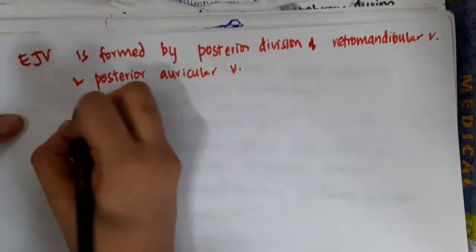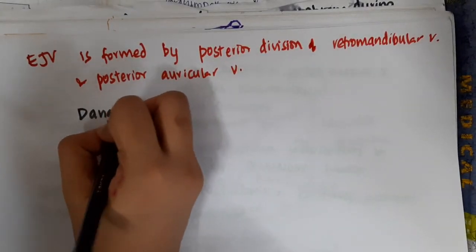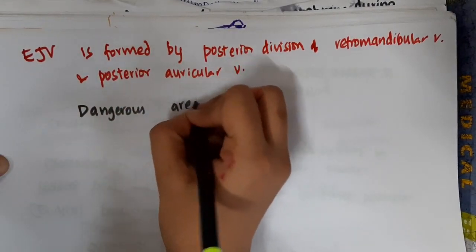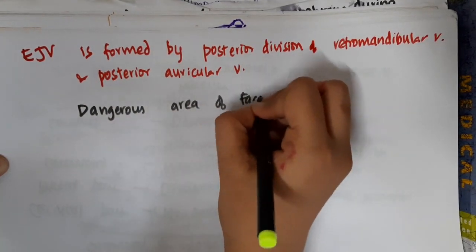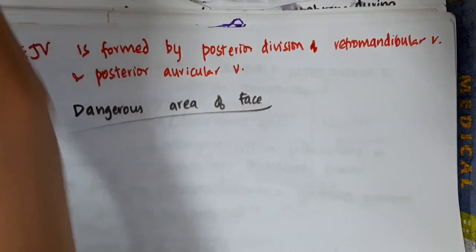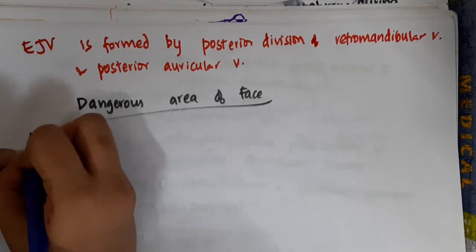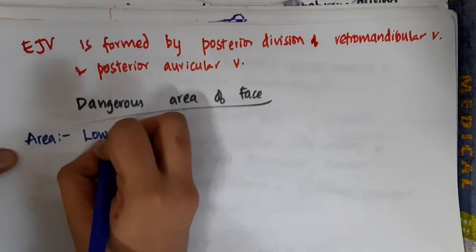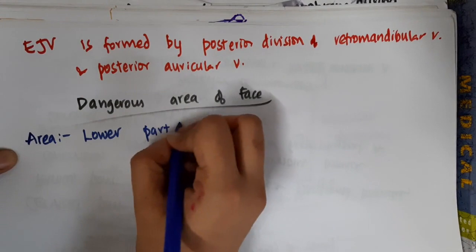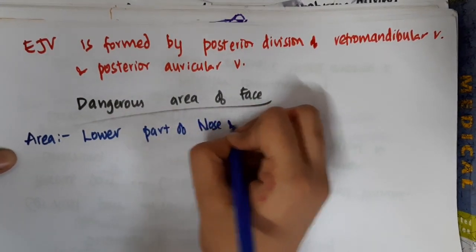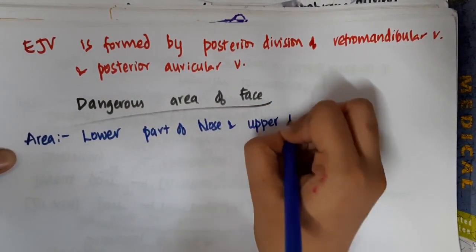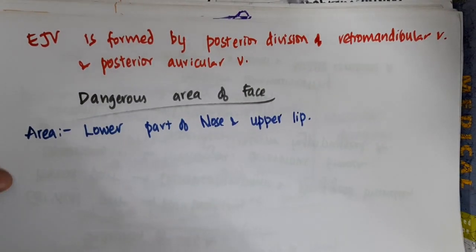Let us now learn some important points about the dangerous area of the face. The dangerous area of the face is in the lower part of the nose and the upper lip.